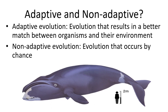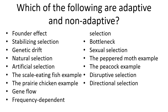Some traits are adaptive and some are non-adaptive. Adaptive traits result in a better match between organisms and their environment — this is natural selection. Non-adaptive traits result just from random chance in the new population. As a homework exercise, go through the different mechanisms discussed today and determine whether each is adaptive or non-adaptive — whether it resulted from random differences in allele makeup, or from a trait that matches the environment through natural selection.